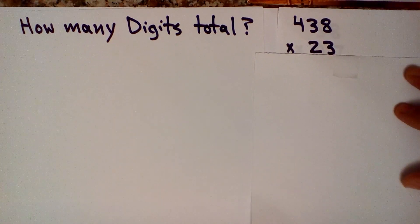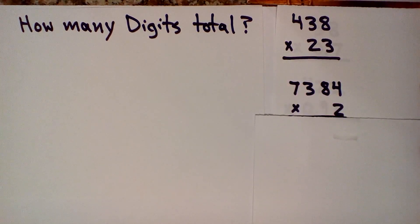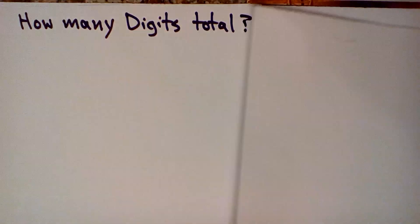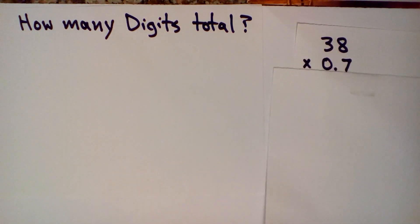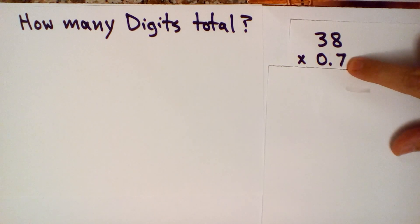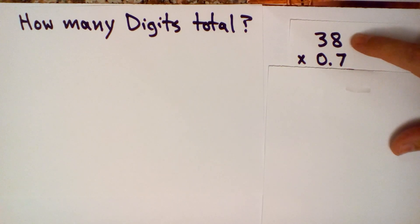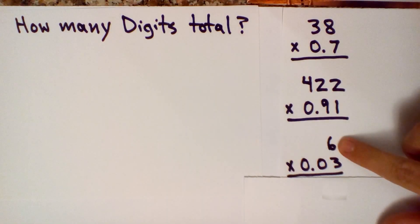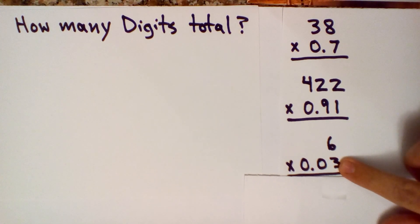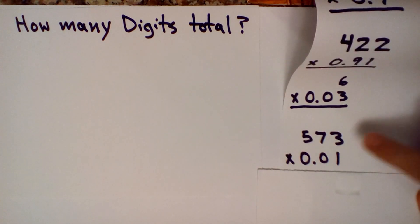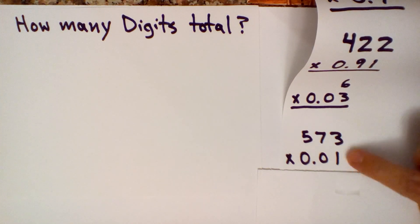More numbers: five digits, five digits, six digits. Let's look at this — this number has two digits and this number has zero, so add them together and you've got two digits total. Three here and none there: three total. One there and minus one there: zero digits total. Three here and minus one there: two digits total.